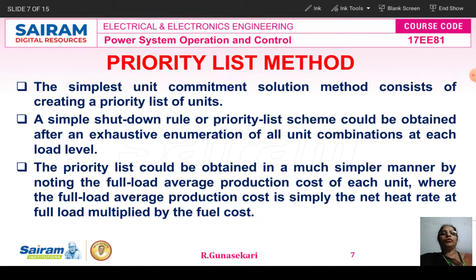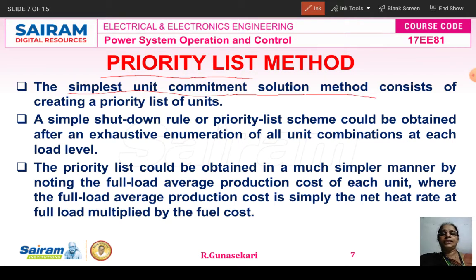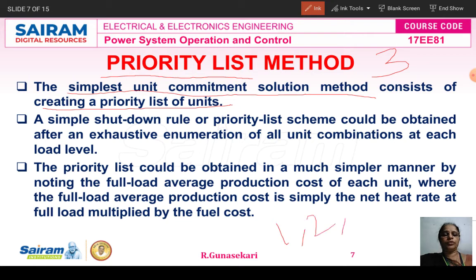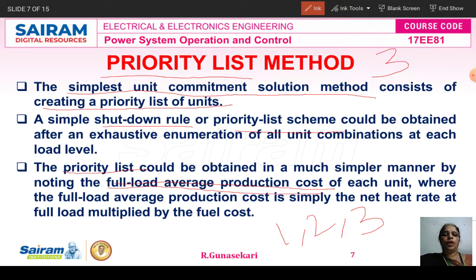The name itself says it — first we prepare the priority list. This method is the simplest unit commitment solution method because it consists of creating a priority list of units. In example one, there are three units: unit one, unit two, and unit three. We prepare the priority list based on the shutdown rule or priority list rule and the full load average production cost.